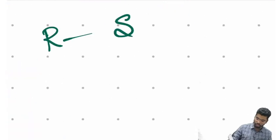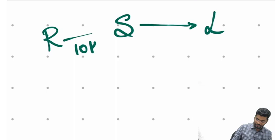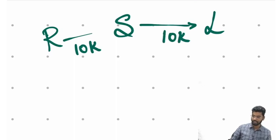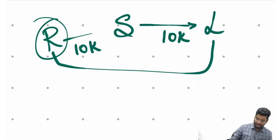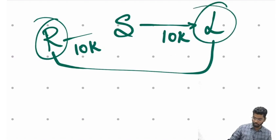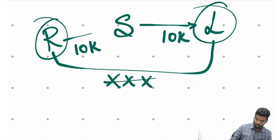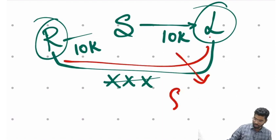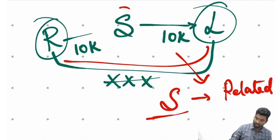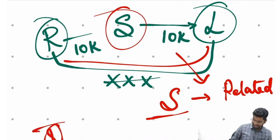Another example: Ram sold goods worth 10,000 to S; S sold goods worth 10,000 to L; L paid money to S. Now if L paid money to R, I have no role in that accounting. But the money L is paying to S is related to S's business, so it should be recorded in S's accounts.